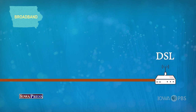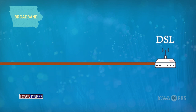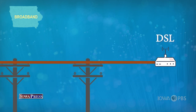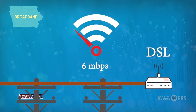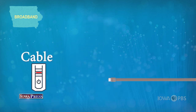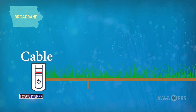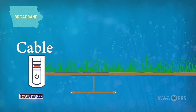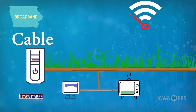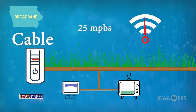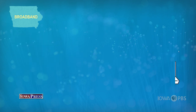DSL is commonly delivered through copper wire, piggybacking on telephone lines, with a typical download speed of 6 megabits per second. Cable is commonly delivered by copper wire laid underground, can carry both data and television signals, with a typical download speed of 25 megabits per second.